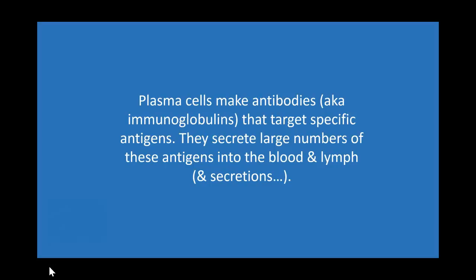As a quick review: plasma cells are part of the specific or adaptive immunity and their job is to make immunoglobulins, also known as antibodies. Each plasma cell produces only one specific type of immunoglobulin — for example, specific to a strain of rhinovirus or one particular type of pollen. They secrete these immunoglobulins, which travel in the humors of the body — mainly the blood and lymph, but also secretions like breast milk and the mucosa of the digestive tract — and when they contact the antigen they're specific for, they help neutralize it.